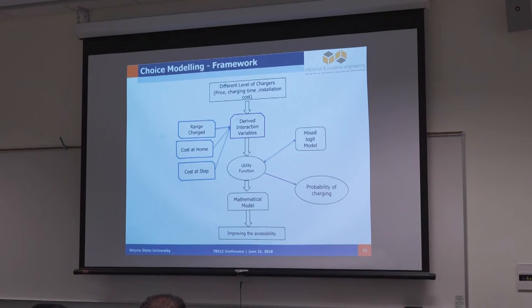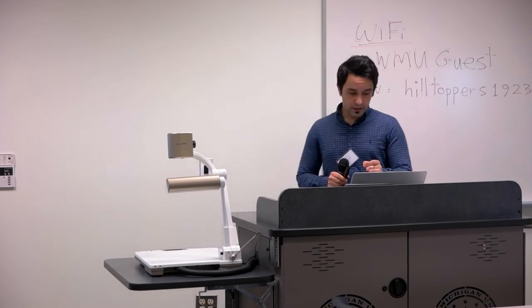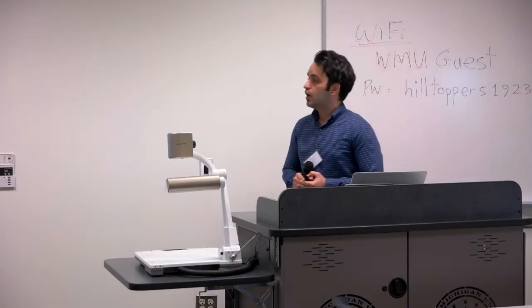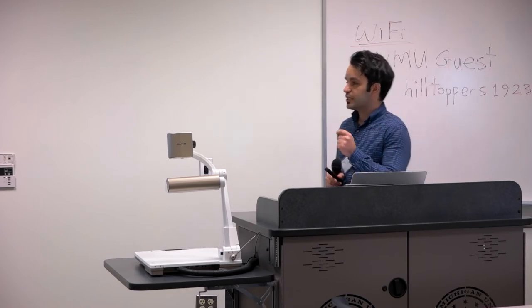Different levels of chargers have different price and different charging time. Different people react to price and charging time differently. To estimate the impact of these variables, we use driver interaction variables. Most studies consider linear relation between price, charging time, and other factors. But by using, for example, the range charge costs at home and costs at work, we can capture the interaction between those variables.